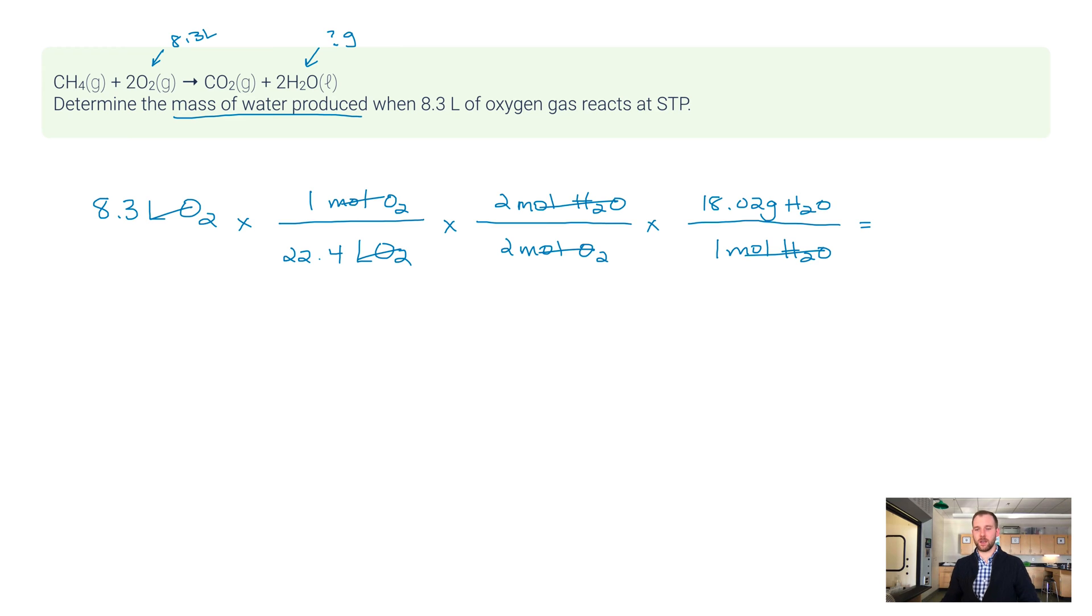That cancels out our moles of water. Now we're just left to calculate. I'm typing into my calculator 8.3 times 18.02 divided by 22.4. Why didn't I include the twos? Well, again, if you've got a 2 on the top and a 2 on the bottom, they end up canceling each other out.